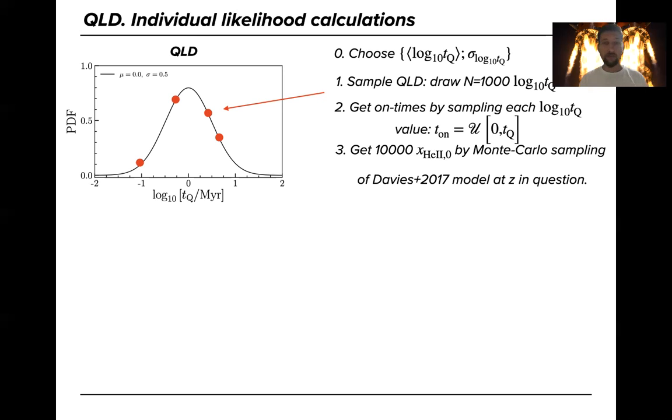We draw 10,000 helium-two fractions from simulations of Davies et al. 2017 model at the redshift of each quasar in question. So we have 10,000 pairs of quasar on-times and helium-two fraction.